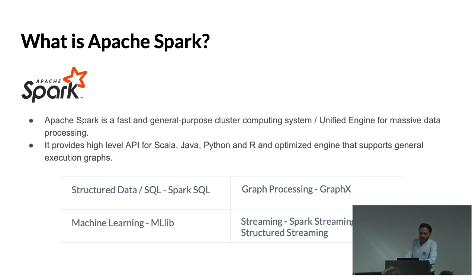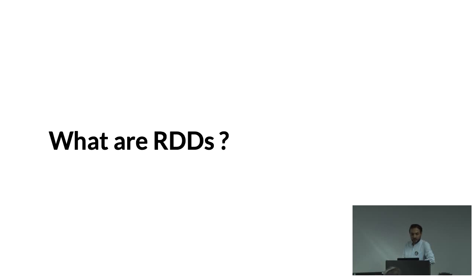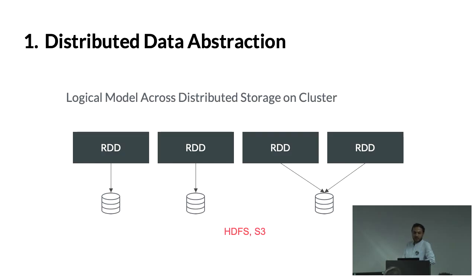Spark is the universal data processing framework. It has components like Spark SQL, GraphX, and if you want to do ML, you can use MLlib. For streaming, you can use Spark Streaming and Structured Streaming. Spark is a distributed framework on top of Hadoop, and its primary data structure is the RDD — Resilient Distributed Dataset — which is split across different partitions and distributed to clusters. You can apply lambda calculus functions on each split. At the backend, you can store split data in HDFS or S3.